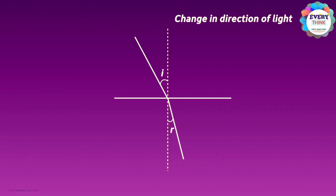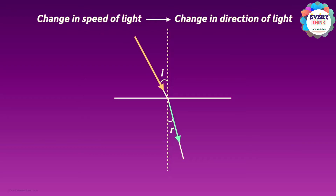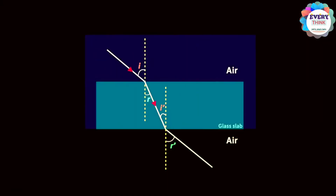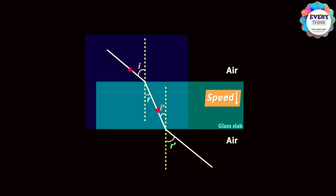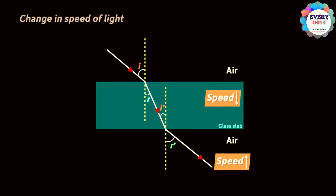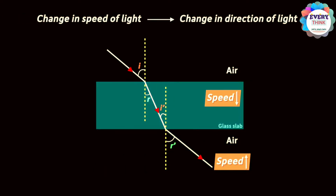The change in direction of light occurs because of the change in the speed of light in that medium. When light enters another medium, there is a change in its speed — the speed may either increase or decrease depending on the medium. When light enters glass at an angle, it travels at a lesser speed than in air. And when it goes from glass to air, its speed increases. So it is because of this change in speed that the direction of light changes.